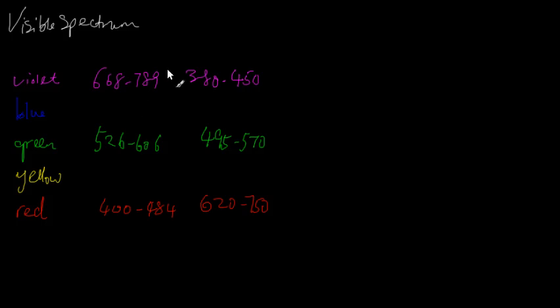Now the numbers from this table I have obtained by searching for visible spectrum in Wikipedia. And what we have here in the first column are the numbers for the frequency of the various colors in terahertz.